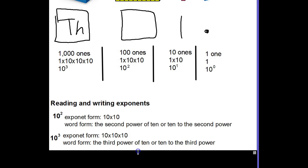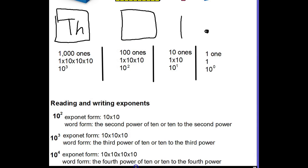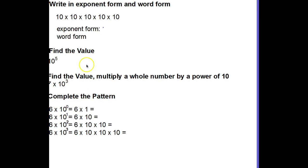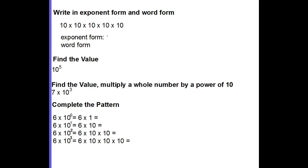For 10 to the fourth power, exponent form would be 10 times 10 times 10 times 10, and in word form it would be 'the fourth power of 10' or '10 to the fourth power.' Now, take a moment to write the exponent form and word form for 10 times 10 times 10 times 10 times 10. Pause the video and try that now.